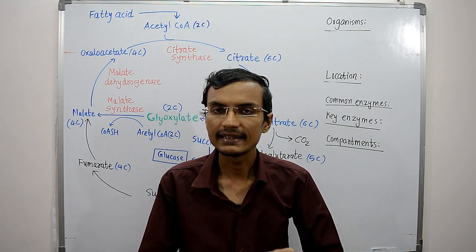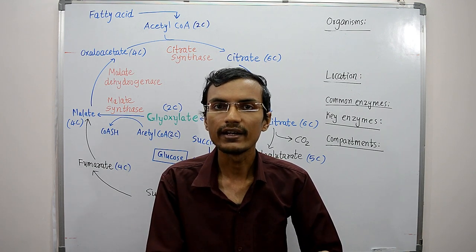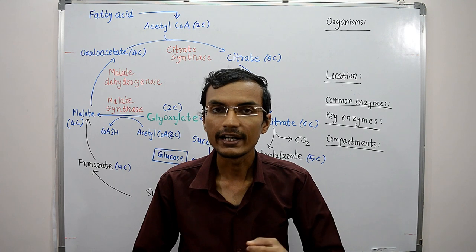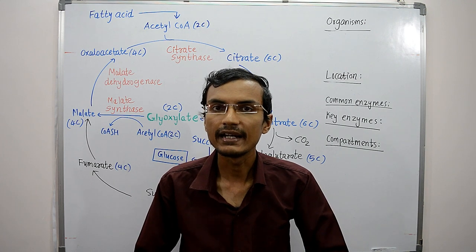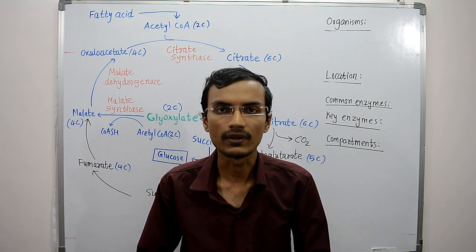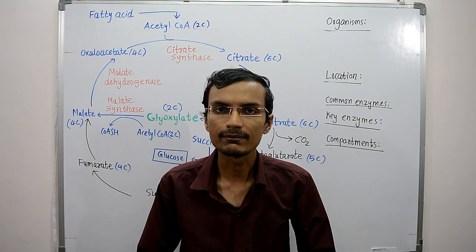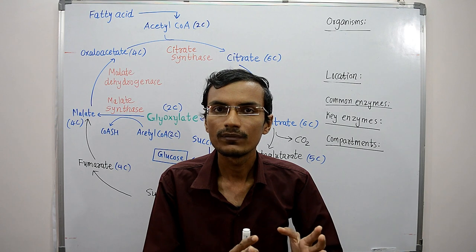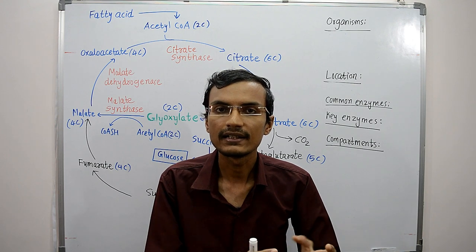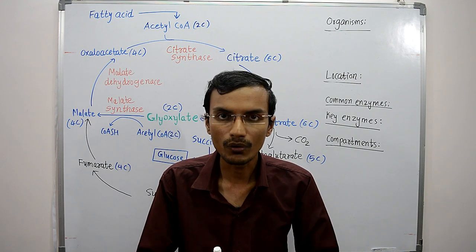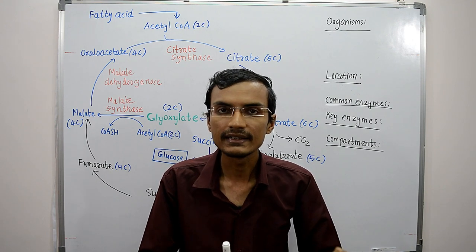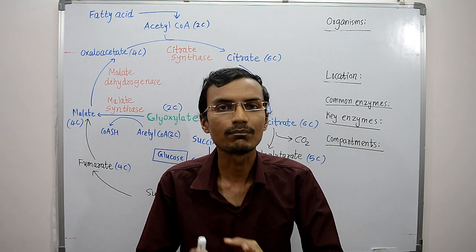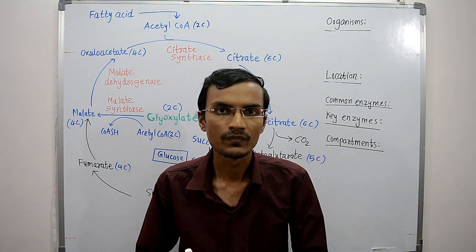Glyoxylate cycle is an anabolic variant of the citric acid cycle. It provides an anaplerotic function, which means the intermediates of the citric acid cycle which are withdrawn are replenished by the glyoxylate cycle.